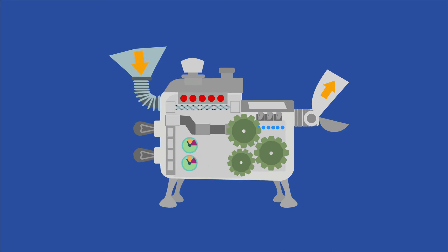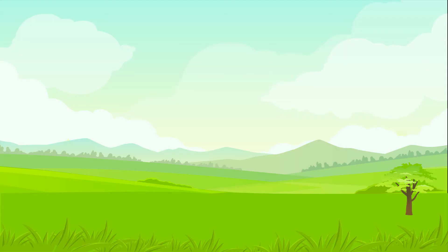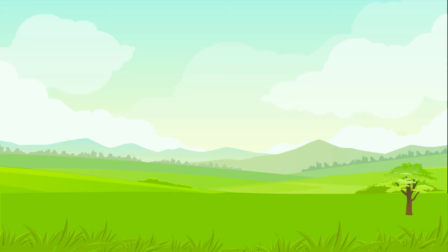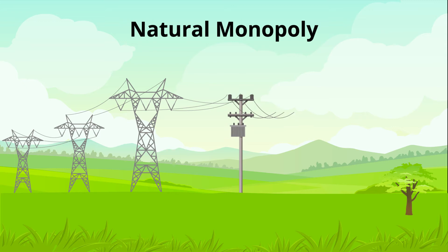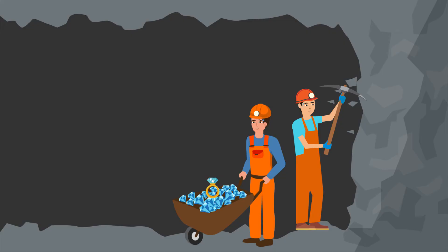There are a few different ways that one company can come to control the market for a good or service. First, the government can grant a company exclusive rights through patents and copyrights. Second, a natural monopoly can form when it is more cost-effective to have one large producer rather than several small ones, which is often the case with infrastructure and utilities like water and electricity. Natural monopolies may also form when a company controls a scarce resource that competitors don't have.